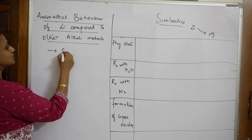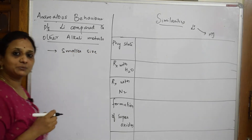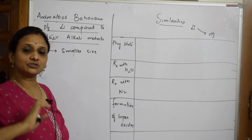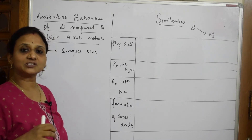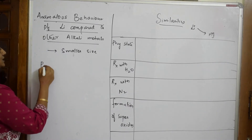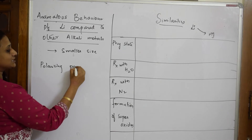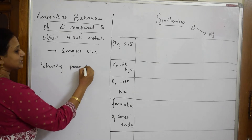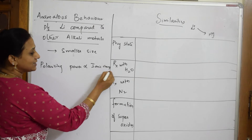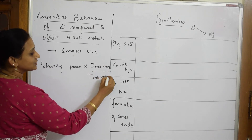The first important concept explaining why lithium is different is its smaller size. Whenever you speak about smaller size, you should immediately relate it to polarizing power. Polarizing power is directly related to ionic charge and inversely related to ionic radius — this is the key relationship to remember.